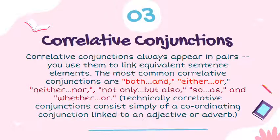The third type is correlative conjunction. Correlative conjunctions always appear in pairs, and you use them to link equivalent sentence elements. The most common correlative conjunctions are: both/and, either/or, neither/nor, not only/but also, so/as, and whether/or. Technically, correlative conjunctions consist simply of coordinating conjunctions linked to an adjective or adverb. Jadi, correlative conjunction selalu terdiri dari dua kata yang menghubungkan dua hal yang sama, biasanya menghubungkan adjective dan adverb.